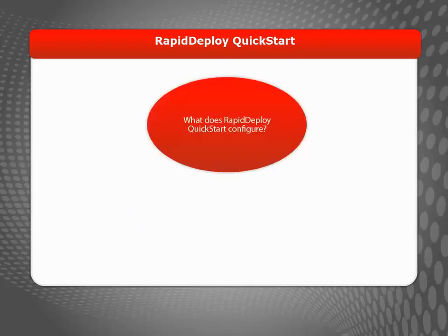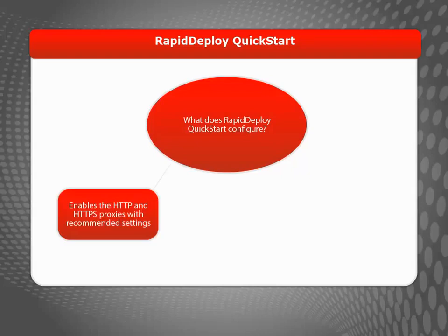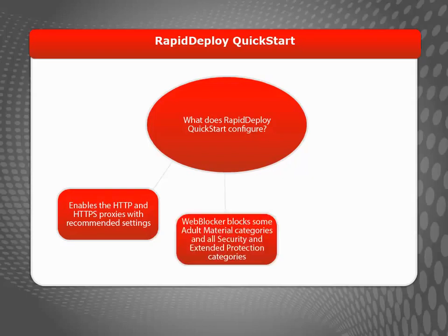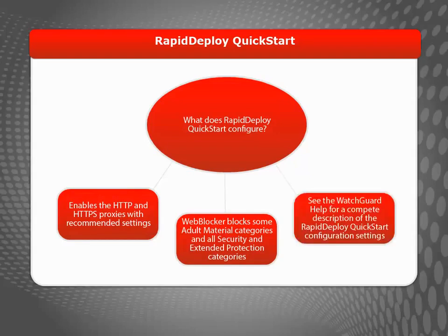So what does Rapid Deploy Quick Start actually configure on the Firebox T10? In addition to the default security settings that apply to all WatchGuard devices, the Rapid Deploy Quick Start configuration enables and configures the HTTP and HTTPS proxies with settings recommended by WatchGuard. It also enables Web Blocker, Gateway Antivirus, and Reputation Enabled Defense with their recommended settings.